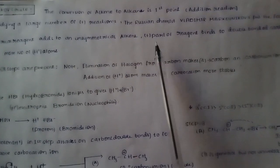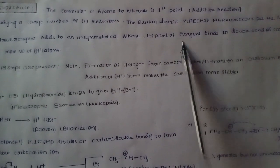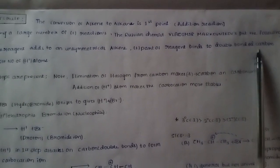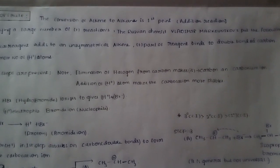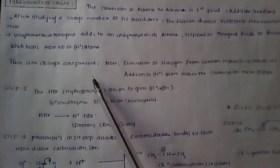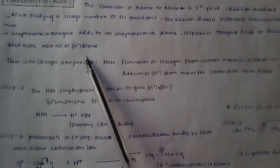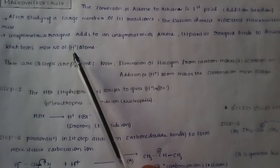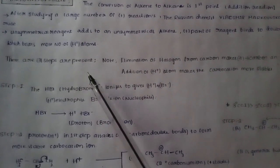The addition part — meaning the positive part of the reagent — binds to the double-bonded carbon which has the more number of hydrogen atoms. If you are attached to a carbon with more hydrogen atoms, you can form more hydrogen atoms. This is the addition reaction; the alkene is the converter.